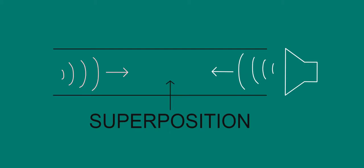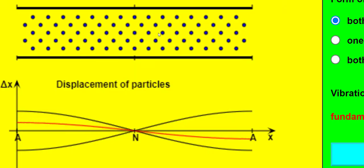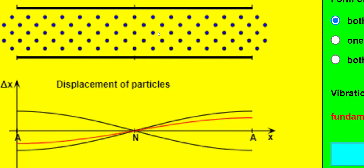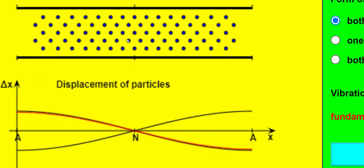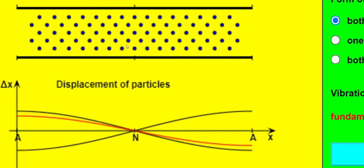Let's go back to the simulation to see what goes on here. In an open tube, anti-nodes exist at both ends. Here, the first harmonic has a node at the centre of the tube.